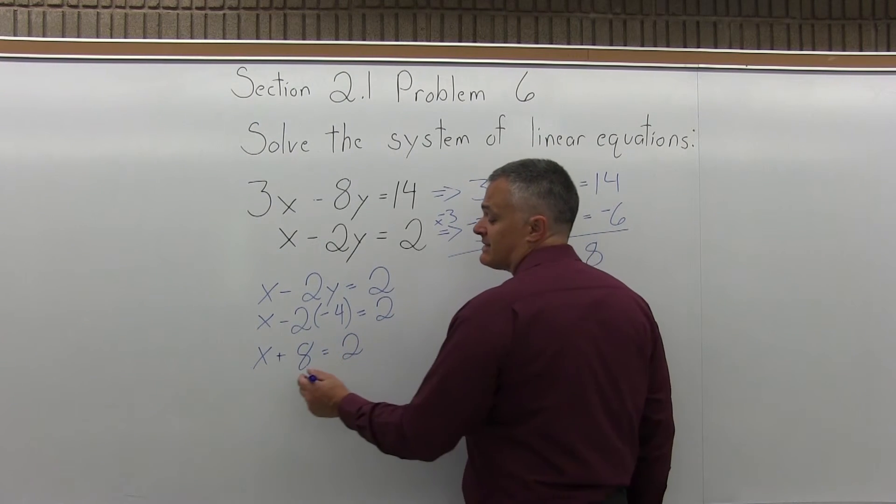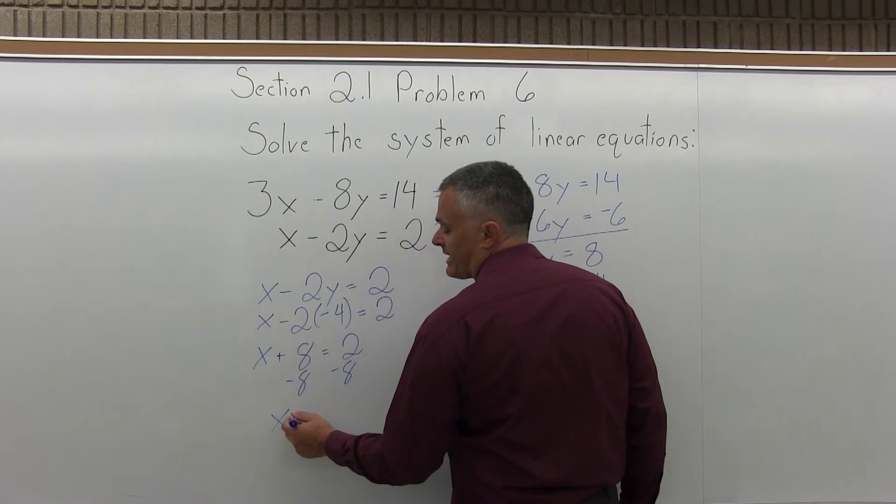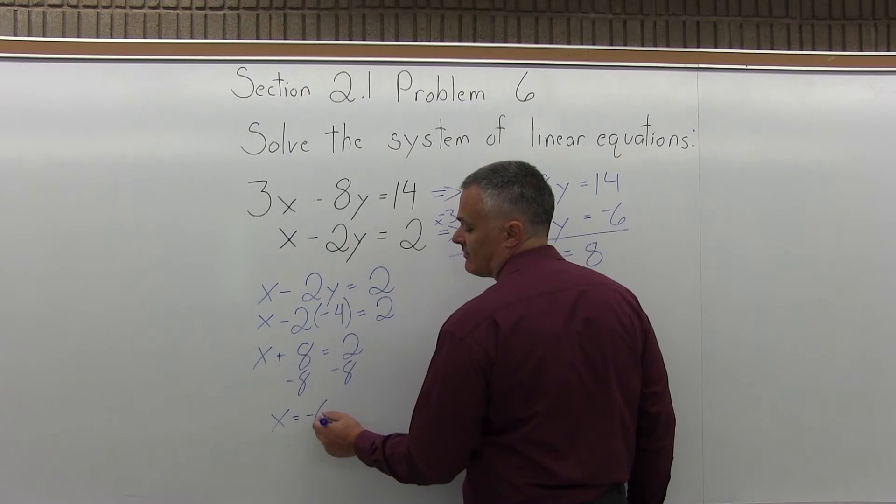Now, I want to get x by itself. So, I do minus 8 on the left, minus 8 on the right. x equals positive 2 and negative 8 is negative 6.